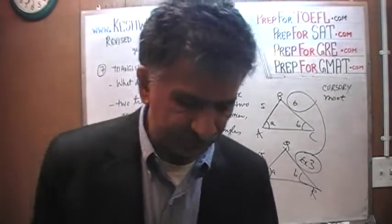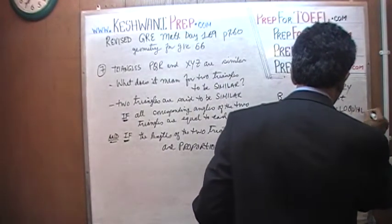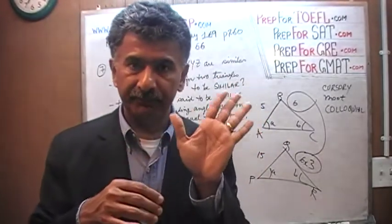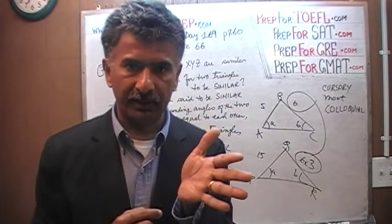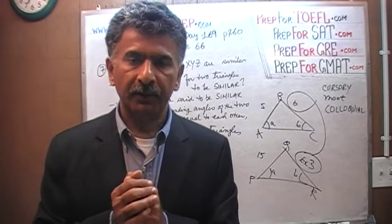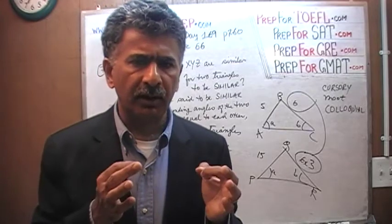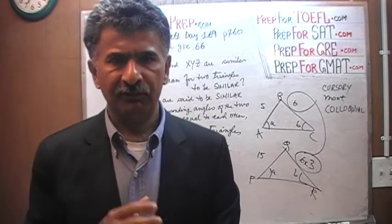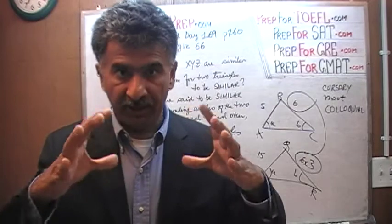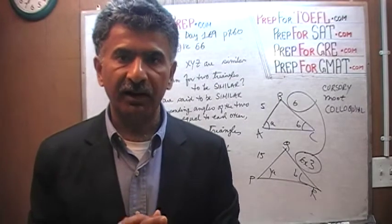What does it mean for two triangles to be similar in a colloquial manner? The concept is like this: you take a blank piece of paper, draw a triangle on it, put it in a photocopier, and magnify it 100% or 200%. That magnified version of the original triangle is your similar triangle. The inside angles are still the same — interior angles do not change — and the sides are exactly proportional. If you magnify the whole triangle by 200%, then obviously every side is magnified 200%. It's just the same triangle being magnified.